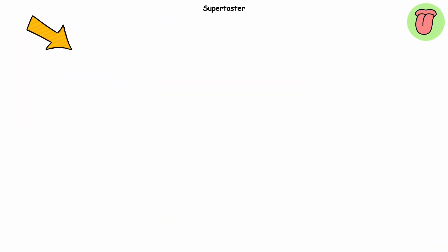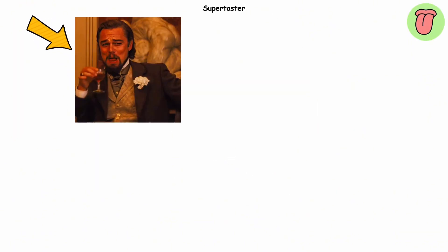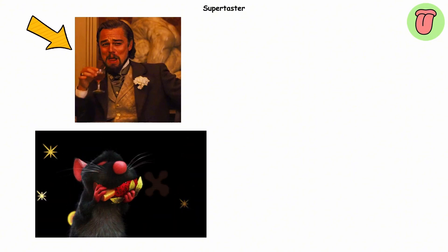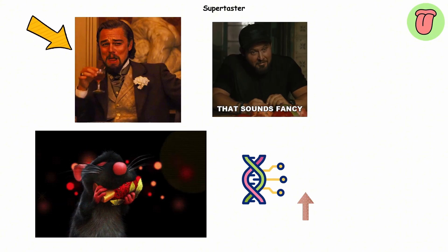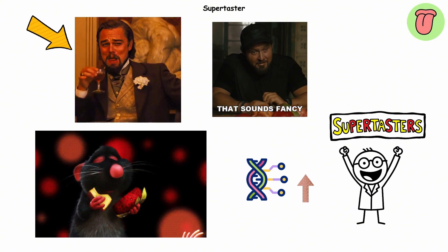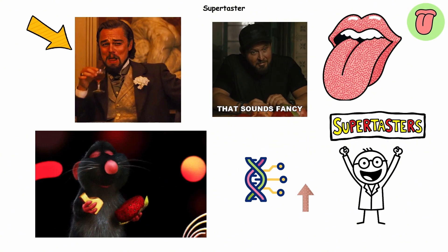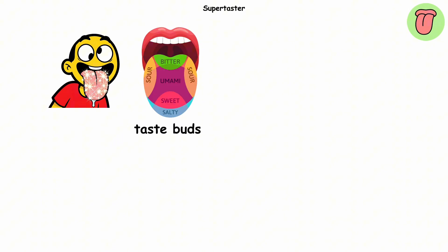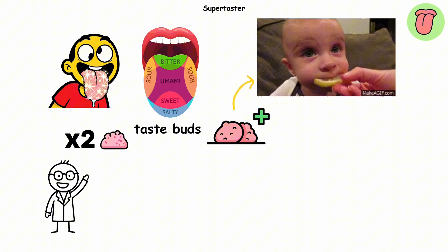Supertaster. We all have that one friend who sips coffee or wine and says they can taste all these different subtle flavors. They're probably just trying to sound fancy, but they might be genetically upgraded. Meet the supertasters, people whose tongues are basically in high definition. Supertasters have way more taste buds than average, up to twice as many. These extra sensors mean every flavor hits harder.